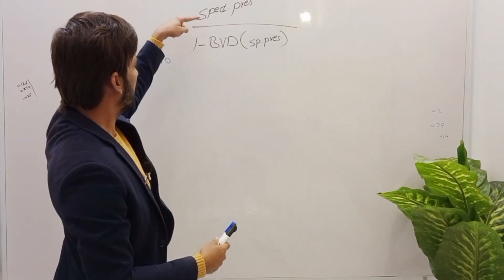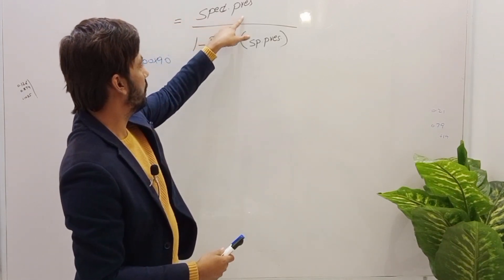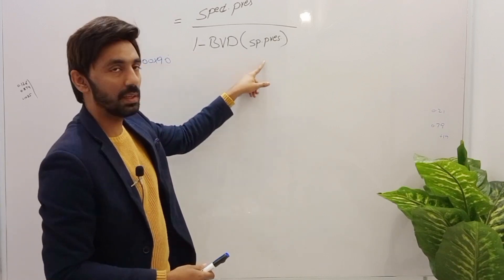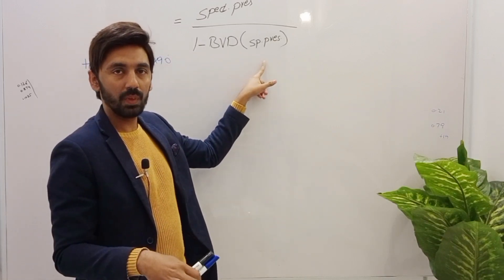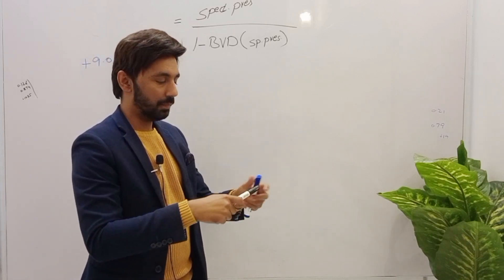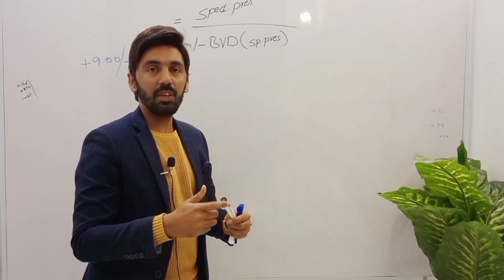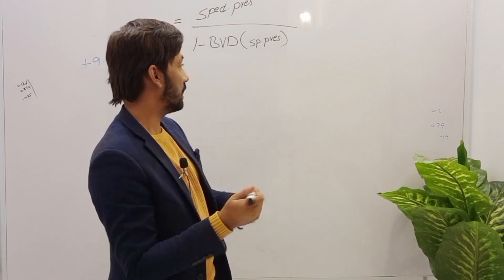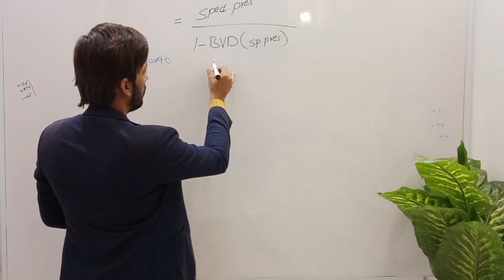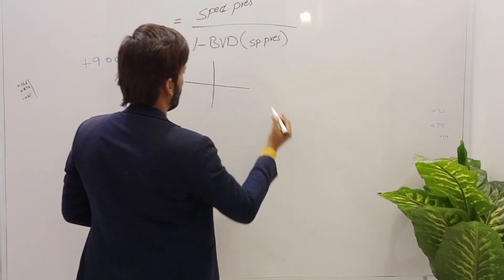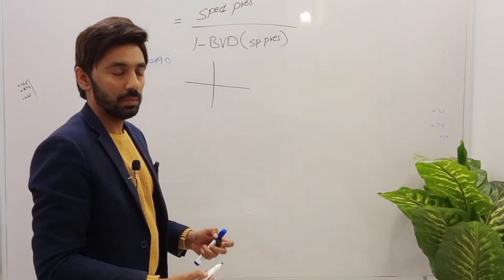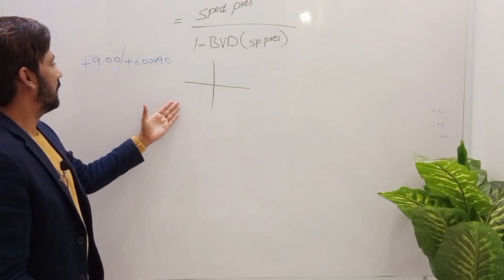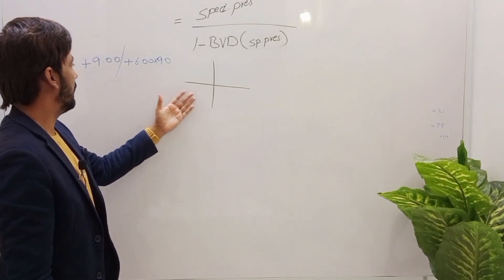We will apply the formula, which is: spectacle prescription over (1 minus back vertex distance into spectacles prescription). There are three different steps in converting spectacles to contact lens prescription, and the first step is the optical cross.